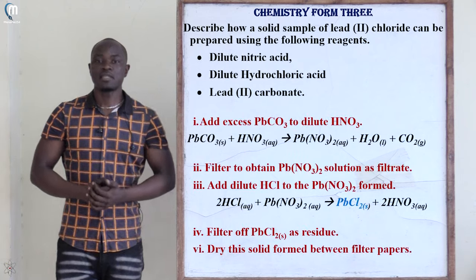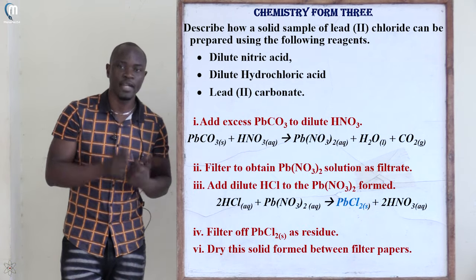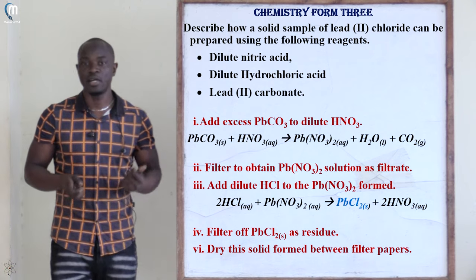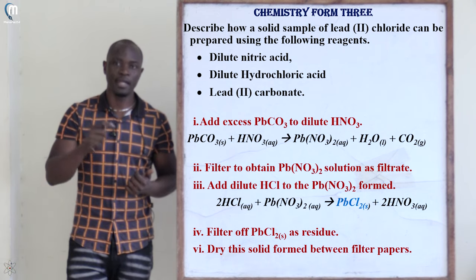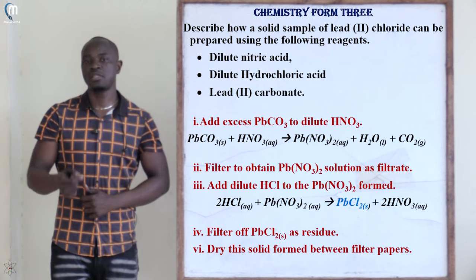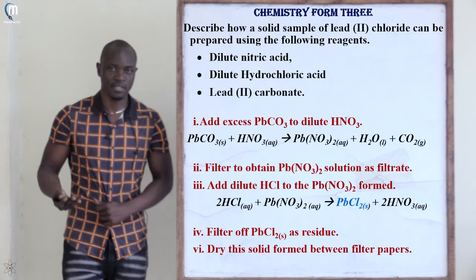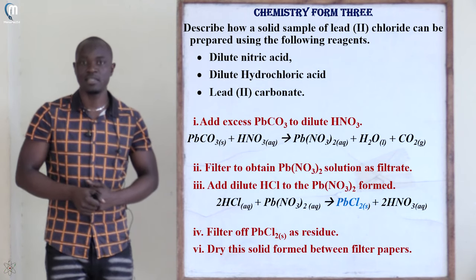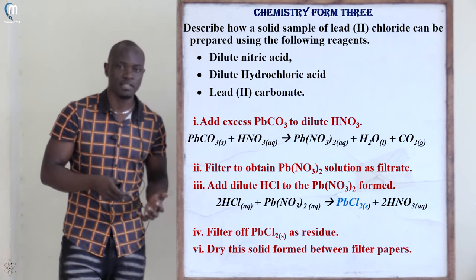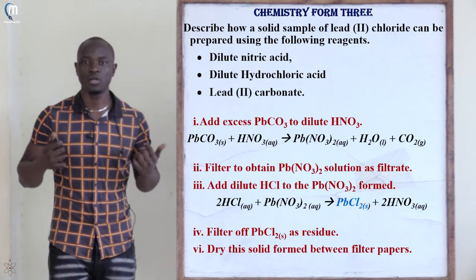The next question is asking: describe how a solid sample of lead(II) chloride can be prepared using the following reagents. The first reagent is dilute nitric acid, the second is dilute hydrochloric acid, and lastly we have been given lead(II) carbonate.